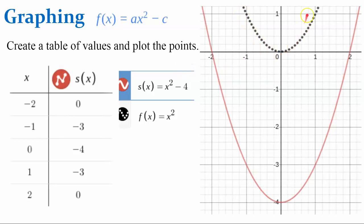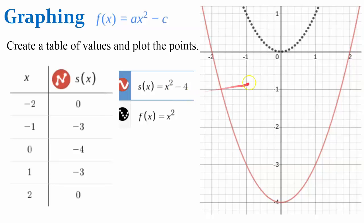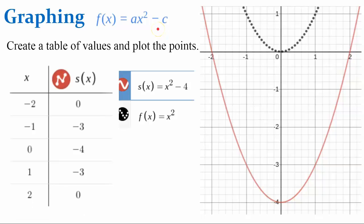Here is our parent function. The axis of symmetry is the line x equals 0 and the vertex is (0, 0). Function s is our red function. The vertex has been translated down 4 units — we go down because c is negative. The y-intercept and vertex are where it crosses the y-axis at negative 4. In all forms of a quadratic written in standard form, c is the y-intercept. In this case, c is also the y-coordinate of the vertex.